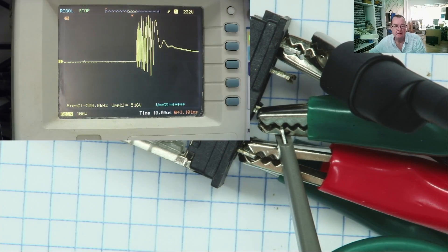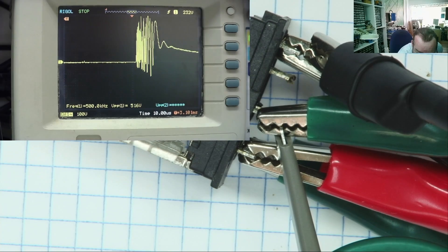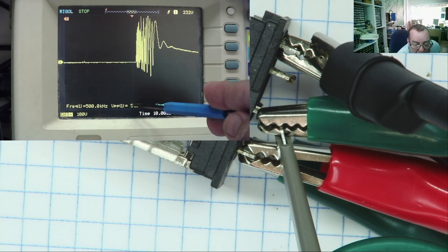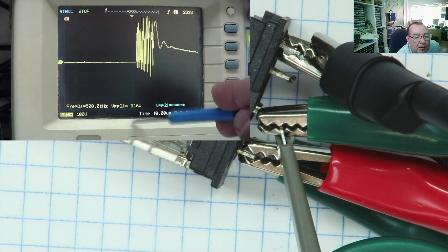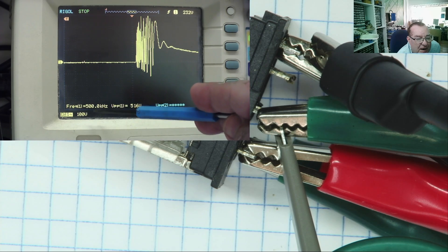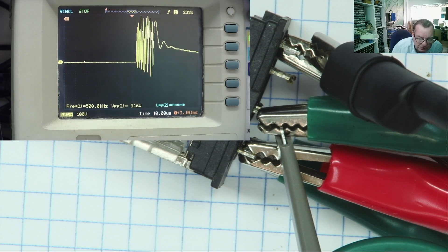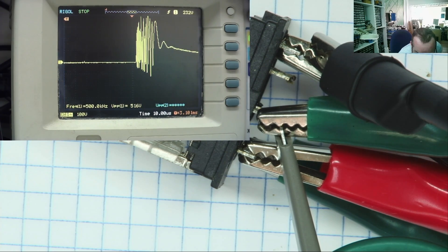I've just froze it there. So, we can have a look at one of these. Well, the first thing you've noticed, I'm sure before I even pointed this out, we actually have 516 volts of spikes here at 500 kilohertz. This is the frequency and this is the voltage. So, we don't have 12 volts, we have a huge amount of voltage.